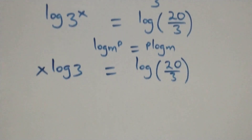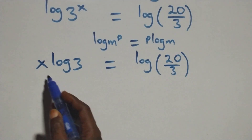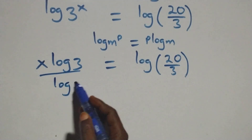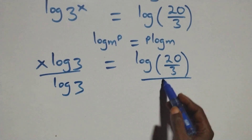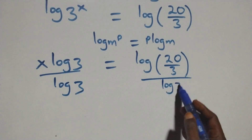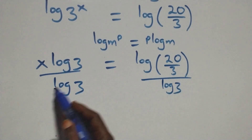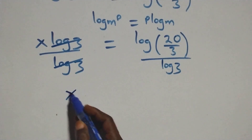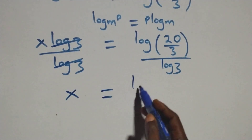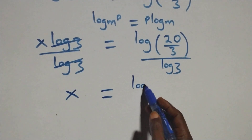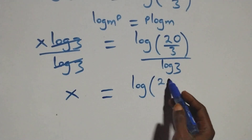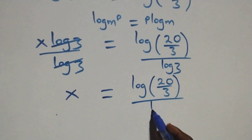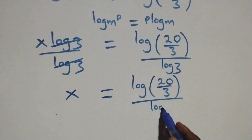This becomes x log 3 equals log(20 over 3). Then divide both sides by log 3. The log 3's cancel each other, and we have x equals log(20/3) divided by log 3.